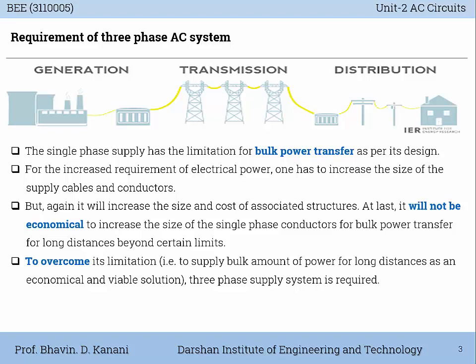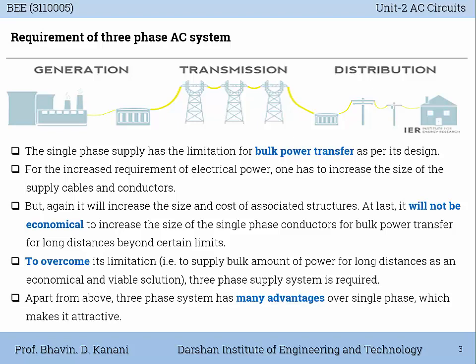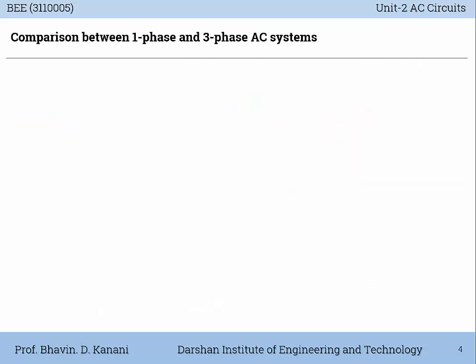To overcome this limitation — that means to supply a bulk amount of power for long distances in an economical and viable solution — a three-phase supply system is required. Apart from the above, the three-phase system has many advantages over single-phase, which makes it attractive. Now let us compare a few points between single-phase and three-phase AC systems.